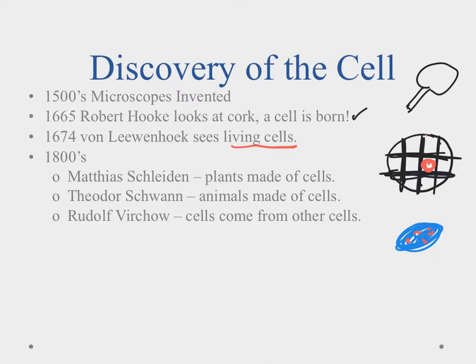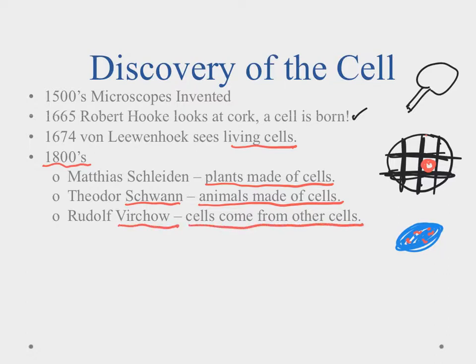People started looking at everything, and in the 1800s broad sweeping statements were made. Matthias Schleiden said that all plants are made of cells. Not to be outdone, Theodore Schwann said that all animals were made up of cells, and therefore all living things are going to be made up of cells.